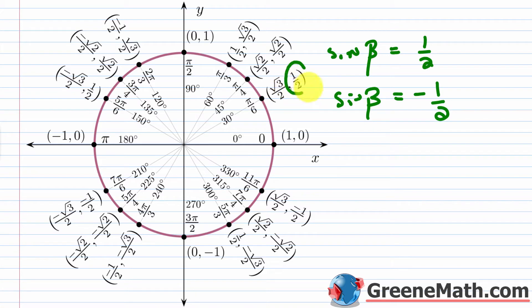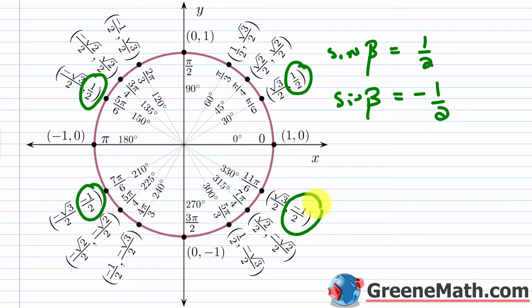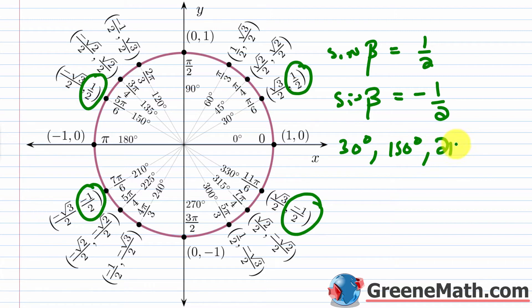There are four locations on the unit circle where this occurs, all with a 30-degree reference angle. In degrees, the solutions are 30 degrees, 150 degrees, 210 degrees, and 330 degrees.